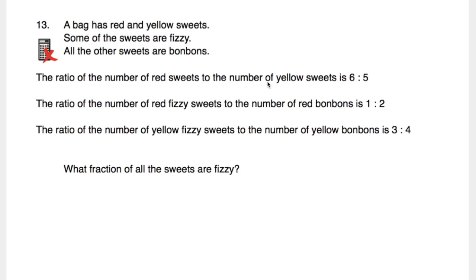The question says: a bag has red and yellow sweets. Some of the sweets are fizzy; all of the other sweets are bonbons. The ratio of red sweets to yellow sweets is 6 to 5. The ratio of red fizzy sweets to red bonbons is 1 to 2. The ratio of yellow fizzy sweets to yellow bonbons is 3 to 4. What fraction of all the sweets are fizzy?